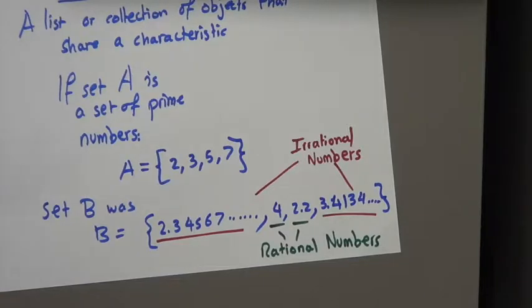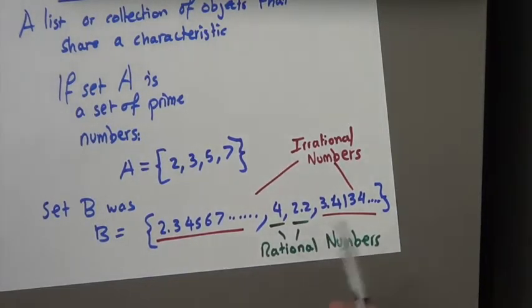And believe it or not, a rational number can have a decimal point. So in this case, 2.2 is a rational number, because it's not continuously being repeated.